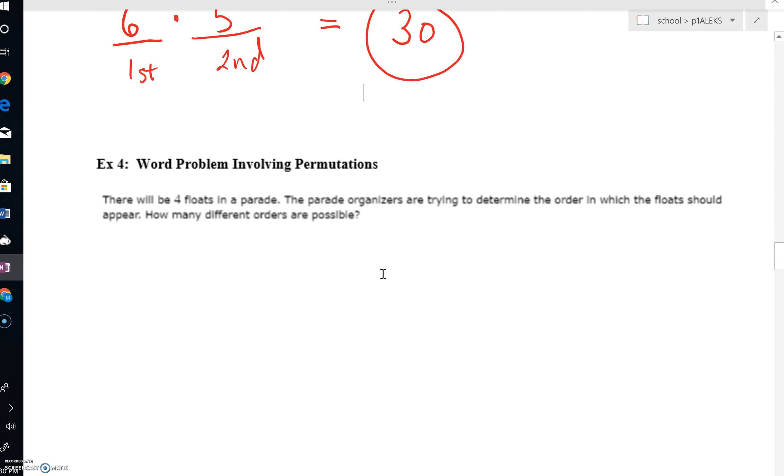All right. Let's take a look at this last problem here. There are four floats in a parade. So we'll say one, two, three, four. The parade is trying to determine the order in which the floats should appear. So all the floats are going to appear. Let's say that this is out in front. And this would be like at the head of the parade. How many choices do you have? Well, you've got four floats. You could have any one of those taking that first position. Then we're down one. We'll have three choices for the second. We're down one right now, two, and then a one.